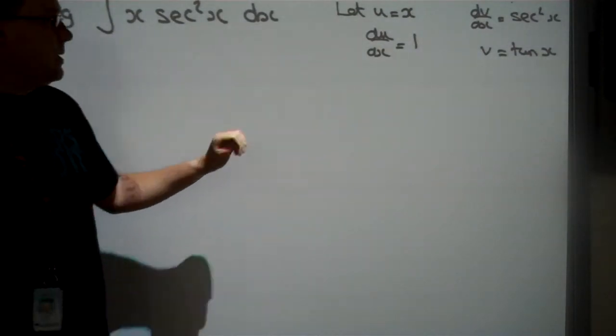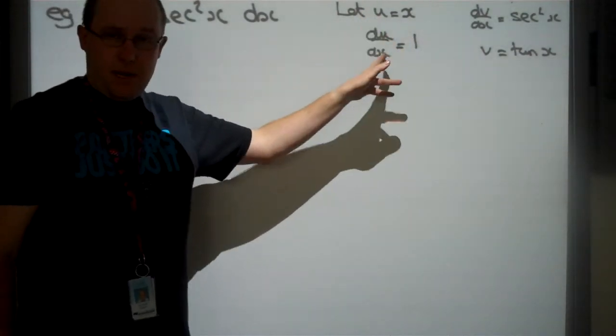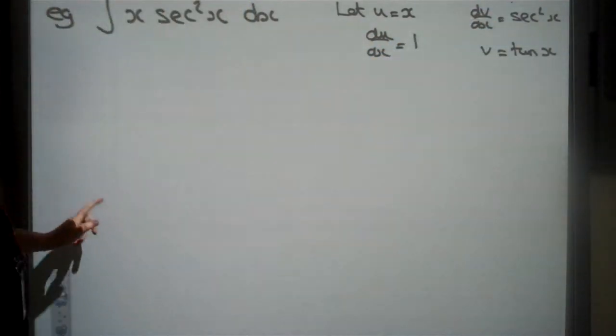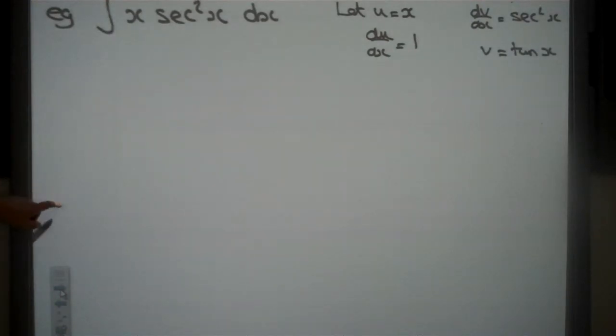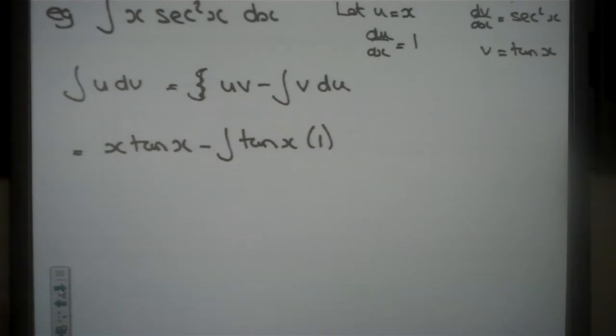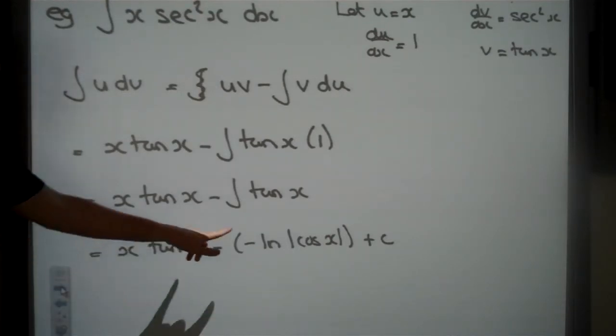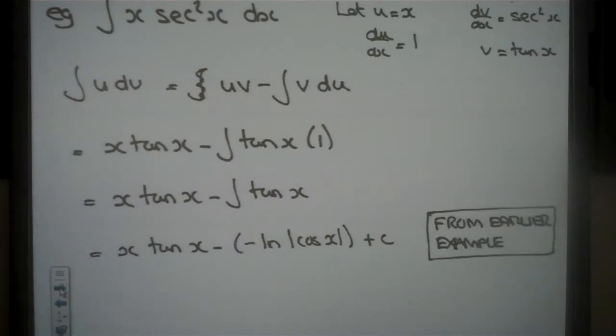When it comes to the formula sheet it's just going to say du rather than du/dx. Same for this, instead of saying dv/dx it's just going to say dv. So we substitute in, write our formula then substitute in, and the integral for tan we should actually know from the third lesson that we just did. The integral of tan is, you've got a choice of two: either the negative ln of cos x or the positive ln of sec x.